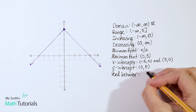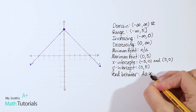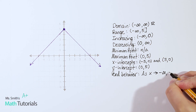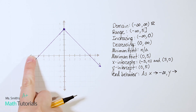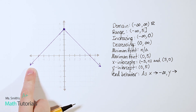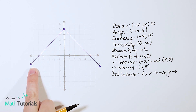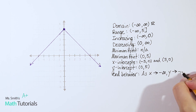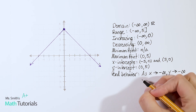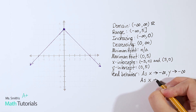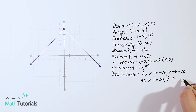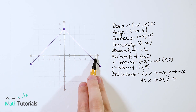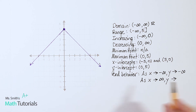For end behavior, remember we need both statements. As x approaches negative infinity, y approaches — let's think about it: as x goes this way, the purple line is going down, and down means negative infinity. As x approaches positive infinity, y approaches — as x goes this way, the line is also going down — so negative infinity as well.